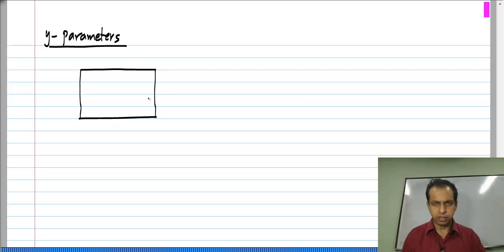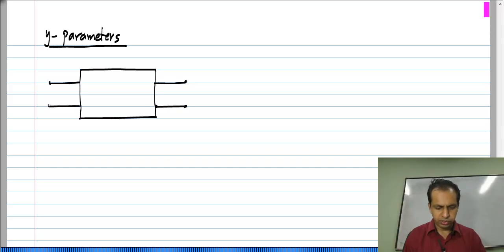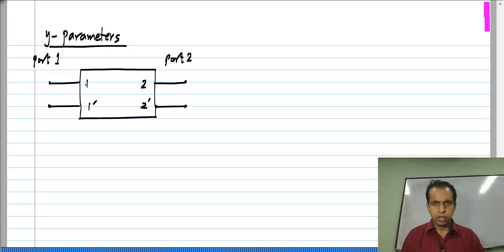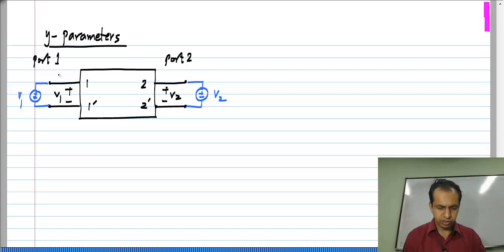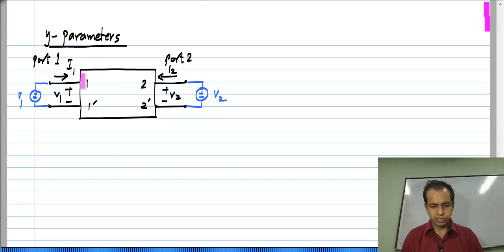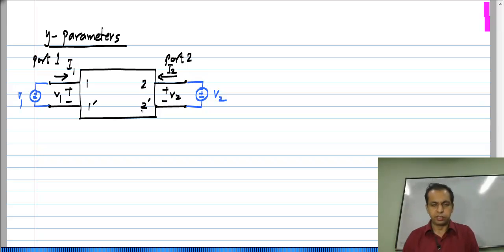Let us consider a linear network — this means that there are no independent sources inside, but there can be dependent sources and linear resistors. This is port 1, this is port 2. Voltages V1 and V2 are applied to these ports, and we will have currents I1 and I2. These directions are conventions for defining the variables; the actual current may be anything depending on the insides of the circuit.